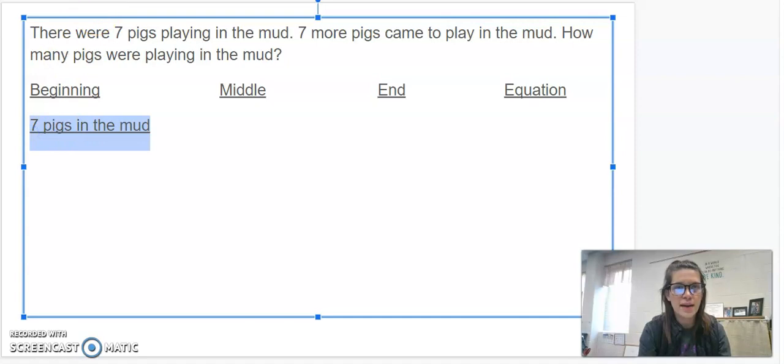Now, let's think about what happened in the middle of our problem. Good. In the middle, we know that seven more pigs came.